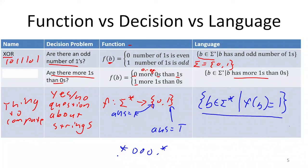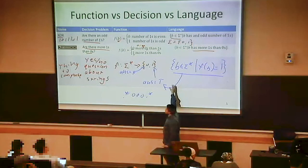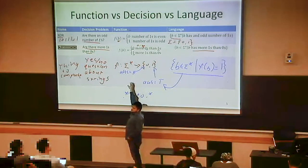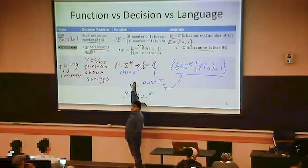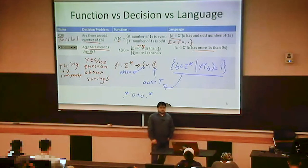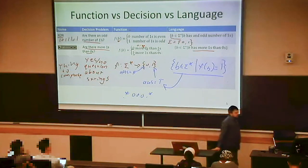For much of the rest of the semester, we're going to be talking about languages as the thing we're computing. But know that when we're talking about languages, they have this relationship with functions. When we say 'compute a language,' we really mean: compute the function that returns zero for strings not in the language and one for strings that are in the language.